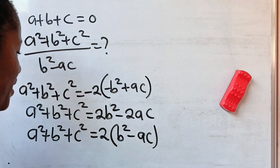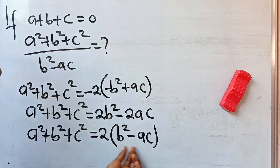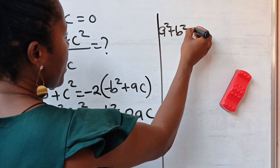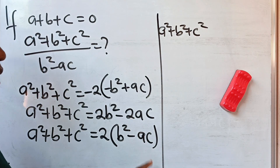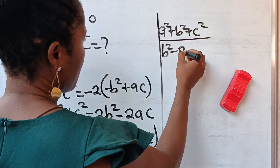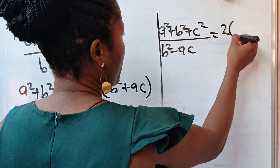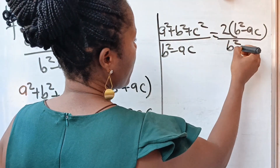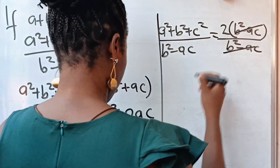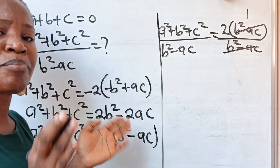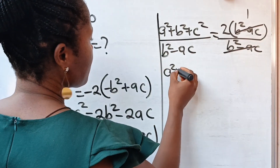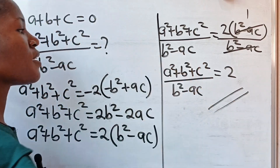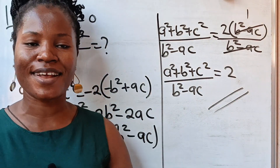Now let us divide both sides of this equation by b squared minus ac. So we have a squared plus b squared plus c squared divided by b squared minus ac, equal to 2 times b squared minus ac divided by b squared minus ac. Since b squared minus ac divided by itself equals 1, it simply means that a squared plus b squared plus c squared divided by b squared minus ac is equal to 2. And this gives us the final solution. Thank you so much for watching — see you in my next video.